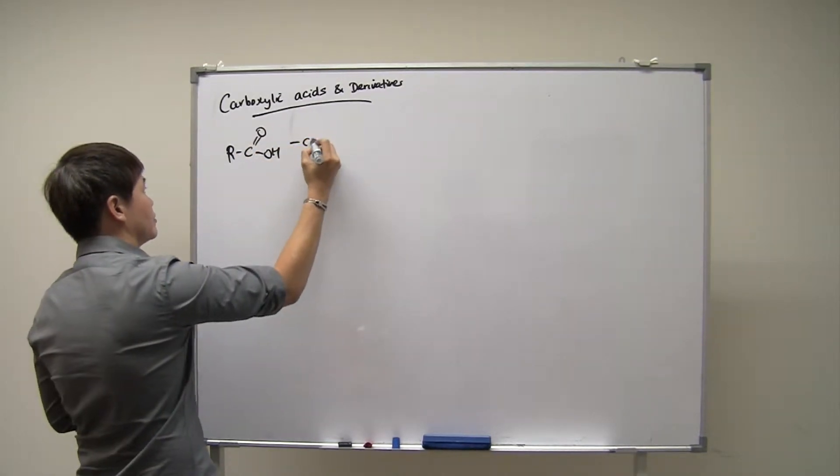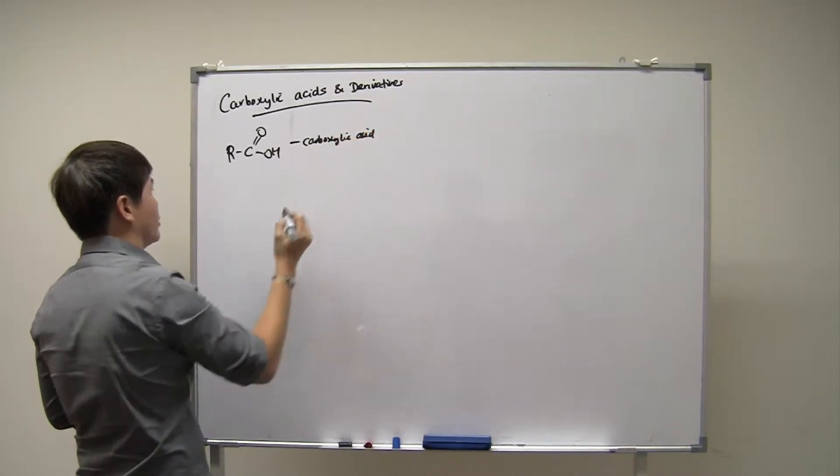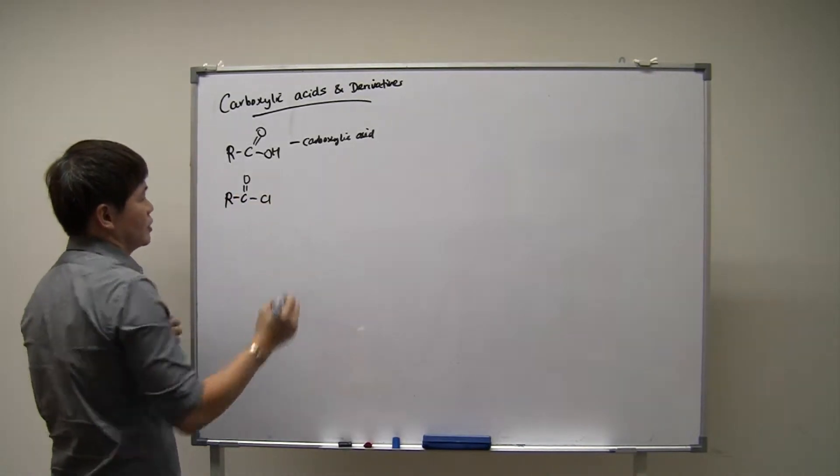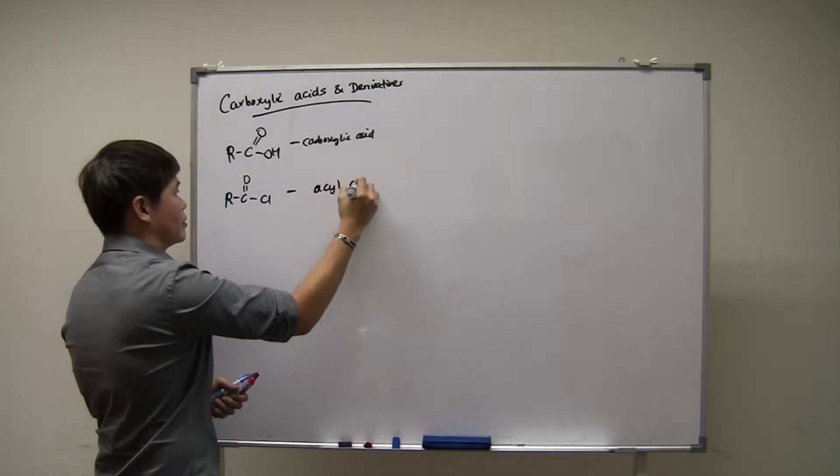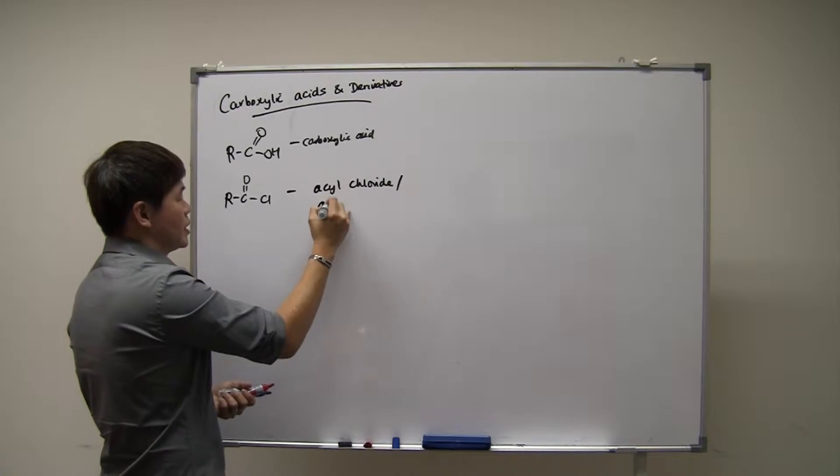This is a carboxylic acid. If you change the OH group into a halogen, like a Cl, now this is acyl chloride. Sometimes it's also known to be an acid chloride.